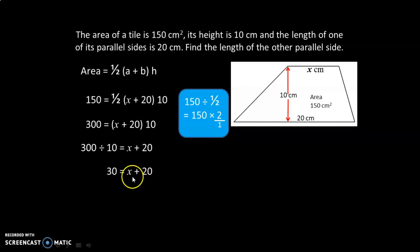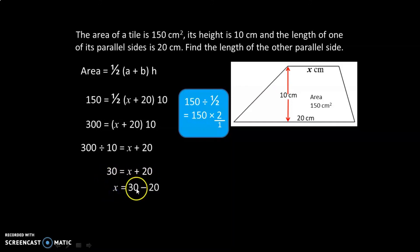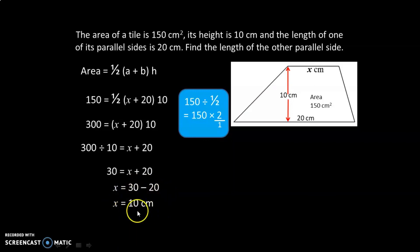Now we take away 20 from both sides: X is equal to 30 minus 20, which is equal to 10 centimeters. So the length of the other parallel side is 10 centimeters. Thank you for watching this video.